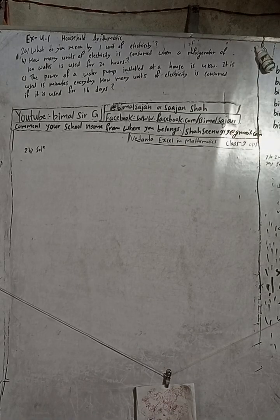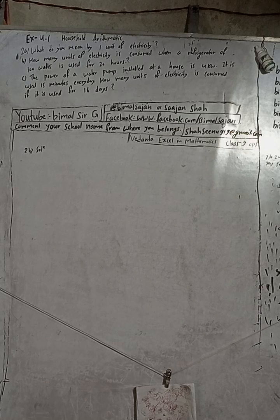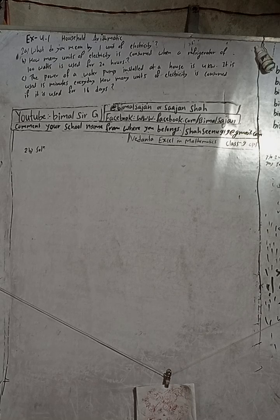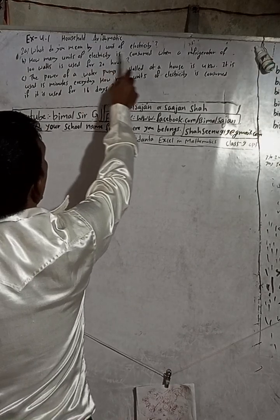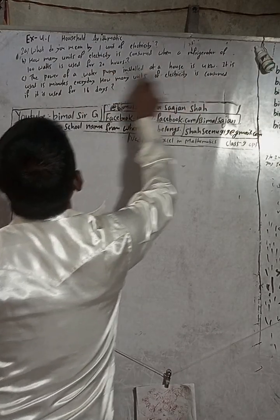Hi class 9 and 10 students, welcome back to Vimal Society's YouTube channel. This is question number 2B, exercise 4.1. How to solve arithmetic without excellent mathematics. Don't forget to check the playlist, you will get a lot of solutions for class 9 and 10. Here the question is: how many units of electricity is consumed when a refrigerator of 100 watts is used for 20 hours?